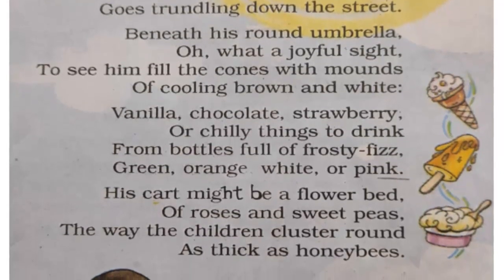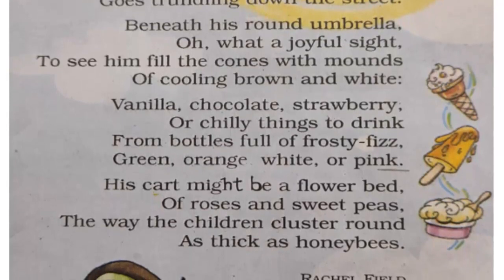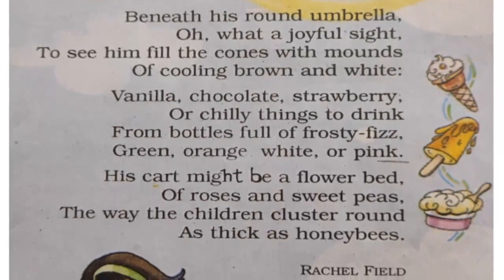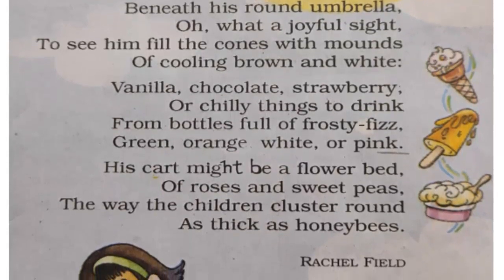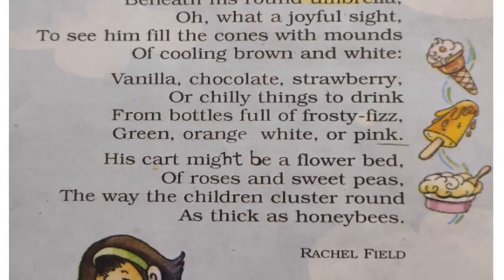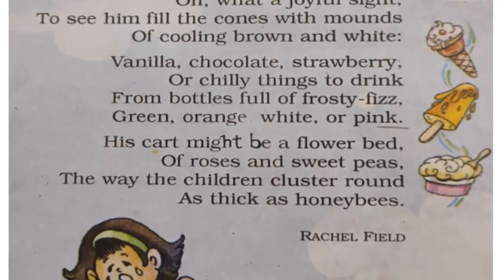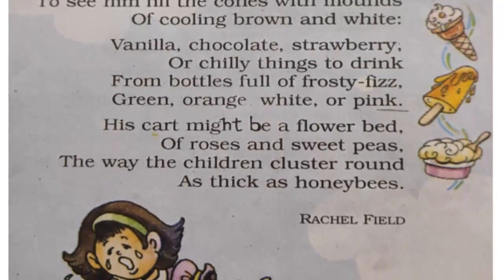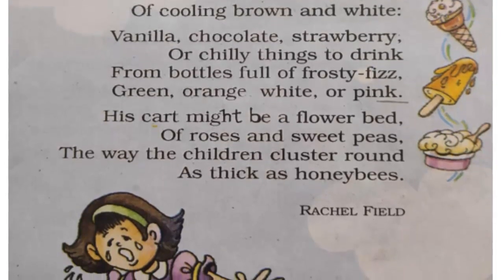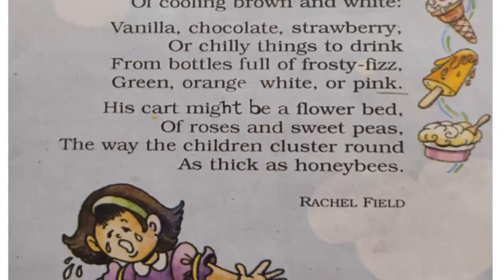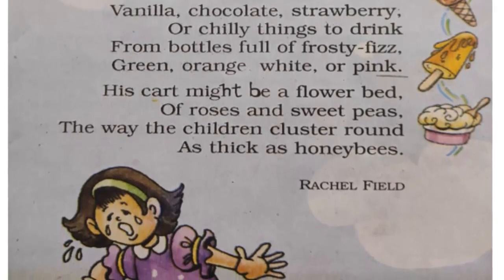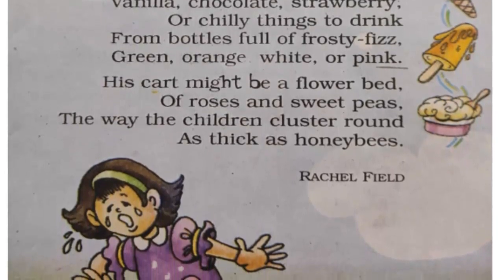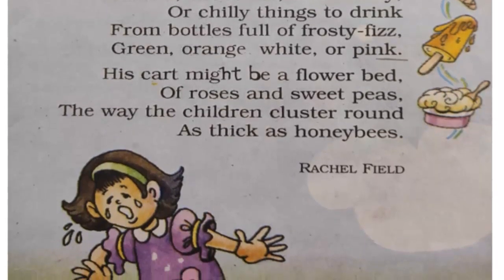Vanilla, chocolate, strawberry, or chilly things to drink, from bottles full of frosty fizz, green, orange, white, or pink. His cart might be a flower bed of roses and sweet peas, the way the children cluster round as thick as honeybees.